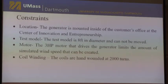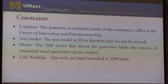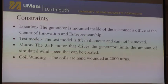We have four main constraints on our project. The first was location — our generator was actually inside our sponsor David Allen's office at the Center of Innovation. Our second is our test model, which is 18 inches in diameter, so we were unable to bring it here today. The third is the motor — we have a 3-4 pound motor that drives the generator and limits the amount of simulated speed that can be created. And the fourth is our coil winding — the coils were hand-wound to around 2,000 turns, so that was a constraint we could not change, as it took a significant amount of time.